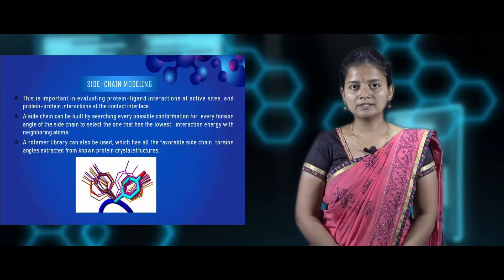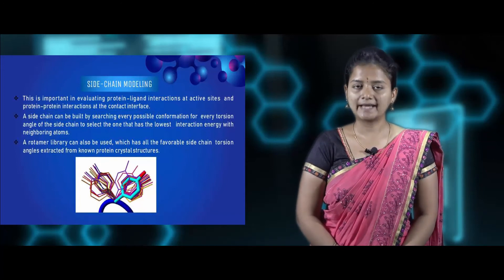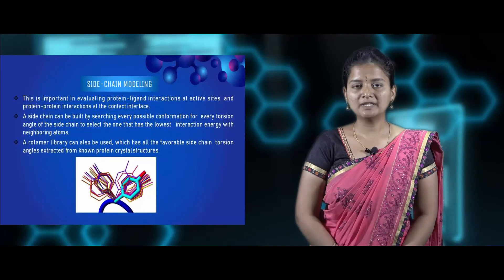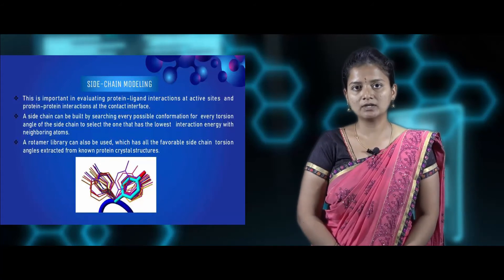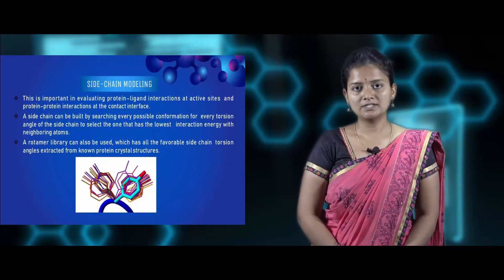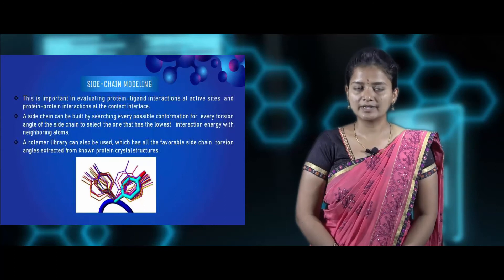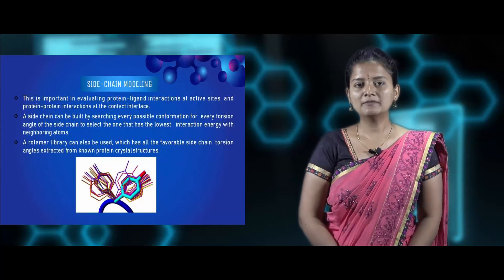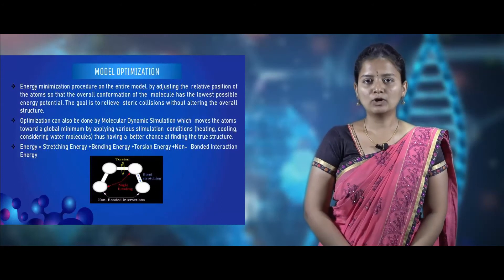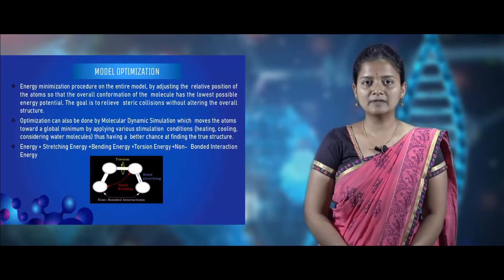The fifth step is side chain modeling. In this method, it evaluates protein-ligand interaction at the active site and protein-protein interaction at the contact interface. The side chains are generated with the help of conformational changes or angles — specifically the torsion angles of the side chains. The best torsion angle with lowest interaction energy with neighboring atoms will be taken into consideration. A rotamer library is used to get the side chains for our target protein sequence by comparing with known protein sequences.